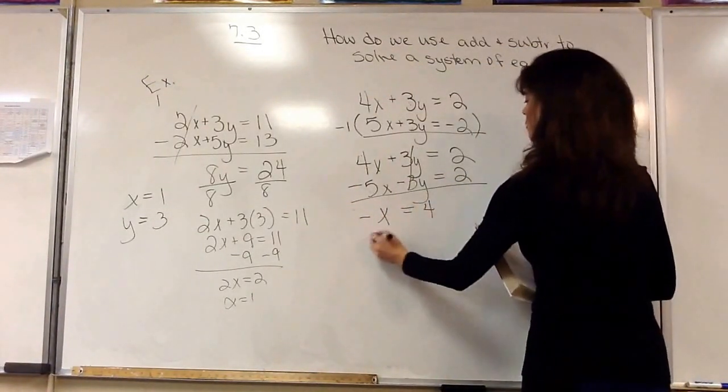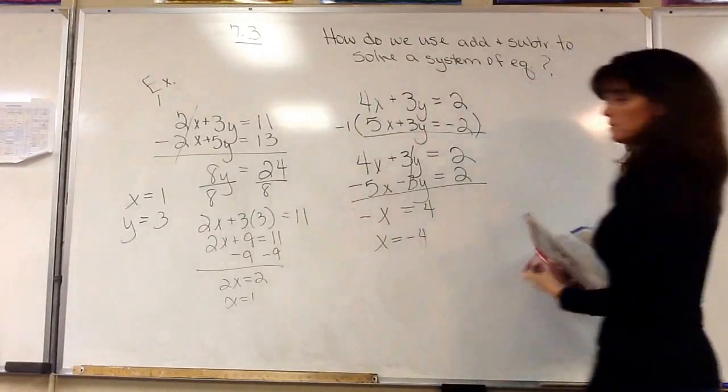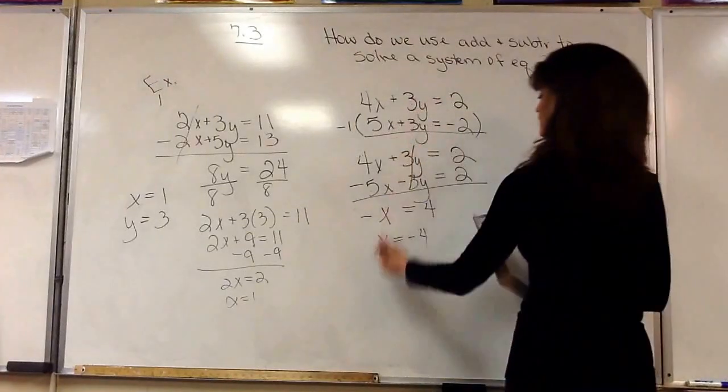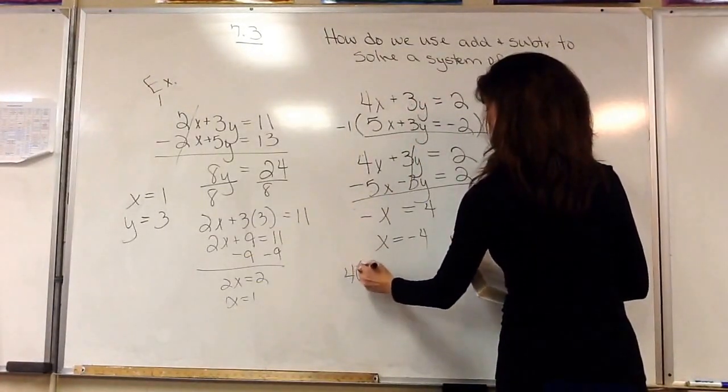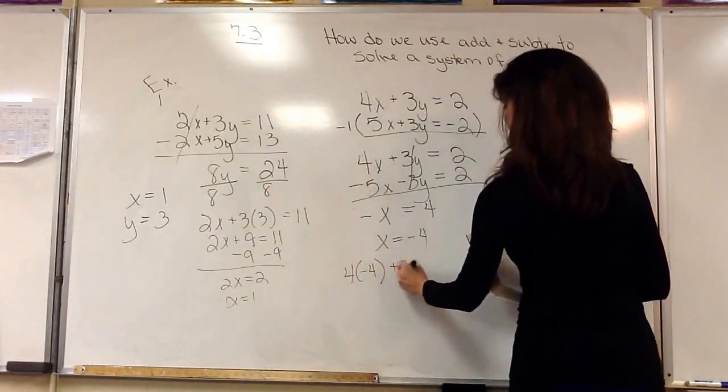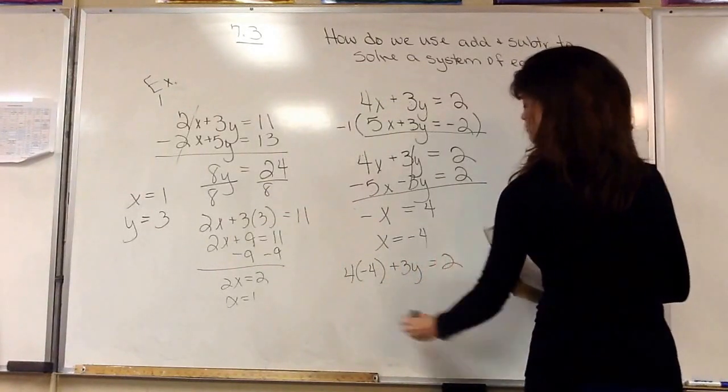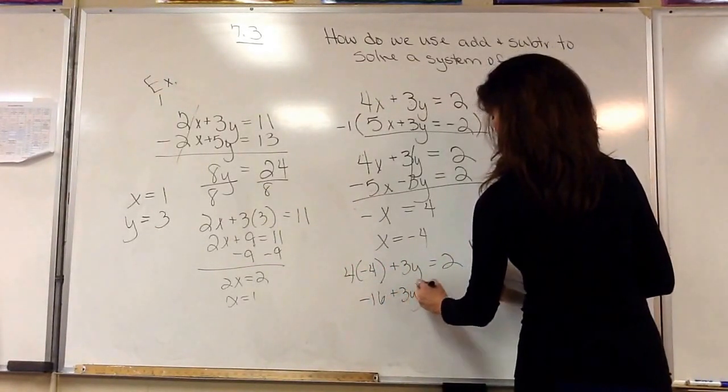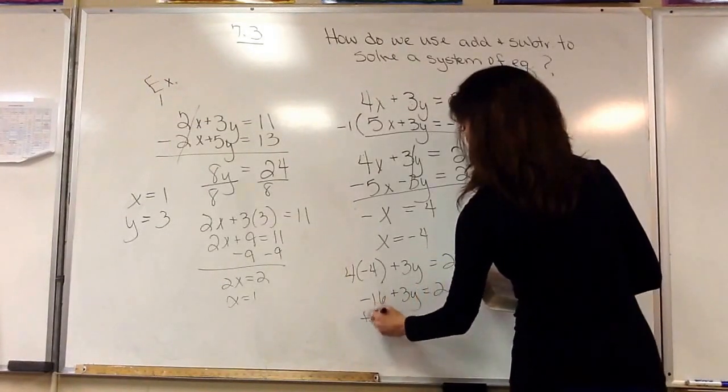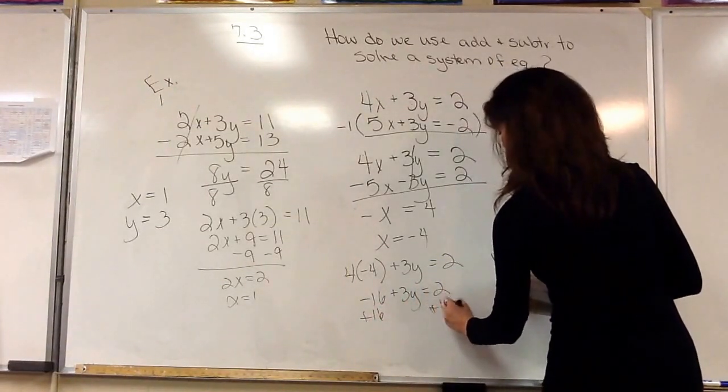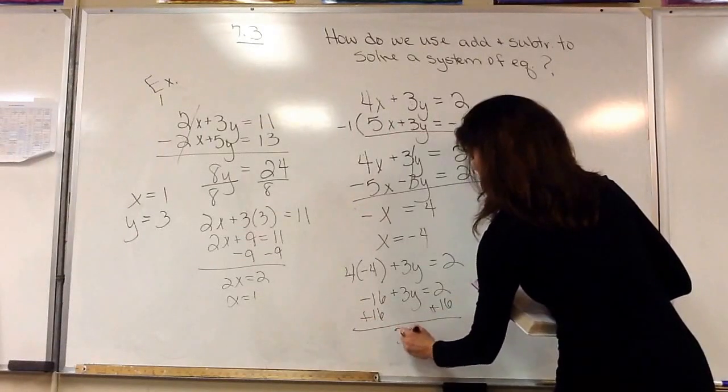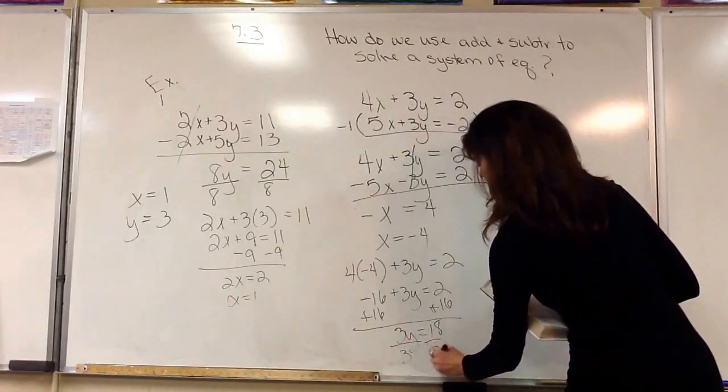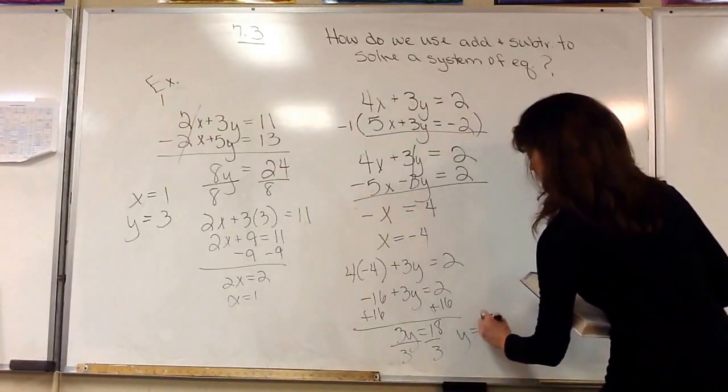So now that would be equal to negative x. The y's will cancel. Equals 4 or x equals negative 4. And now I'm simply just going to substitute that x into either equation. 4 times negative 4 plus 3y equals 2. 4 times negative 4 is negative 16 plus 3y equals 2. We're going to add the 16 to both sides. So we get 3y equals 18, divided by 3, and y equals 6.